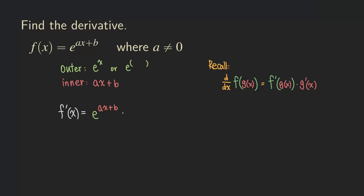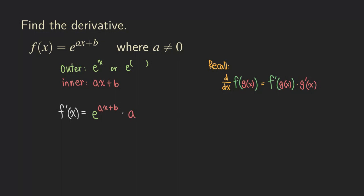Next, we multiply by the derivative of the inner function. The derivative of ax plus b: since b is a constant it becomes zero, so we just get a. Cleaning up, our derivative for this function is a times e to the ax plus b.